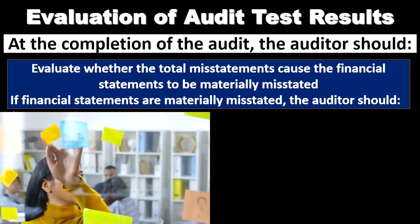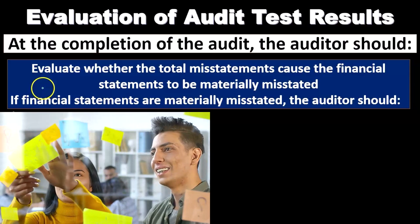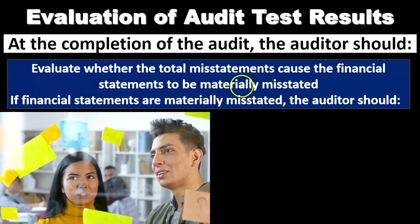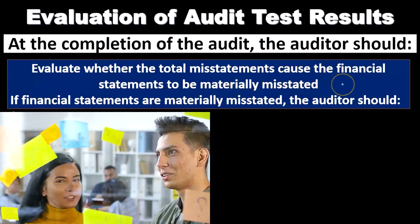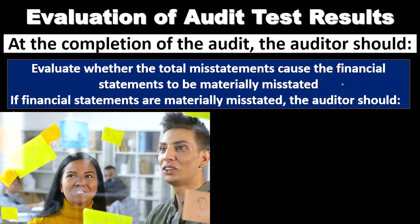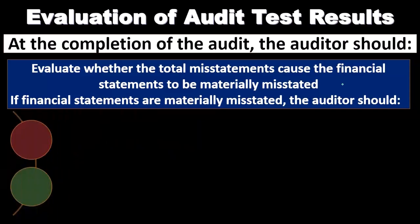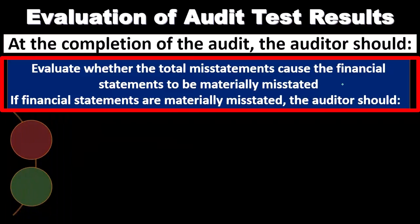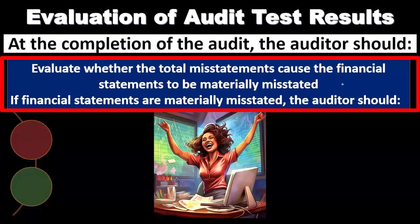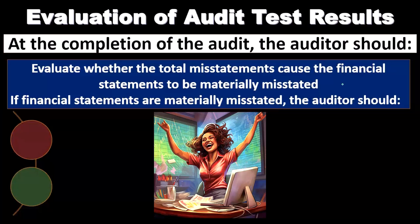At the end of the audit process, we evaluate whether the total misstatements cause the financial statements to be materially misstated. We consider back at the complete financial statement level, taking the financial statements as a whole — if we add together the total misstatements found at the assertion level, would they add up to be a material misstatement at the financial statement level as a whole?